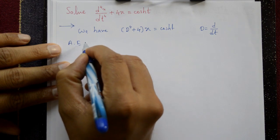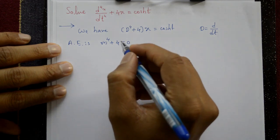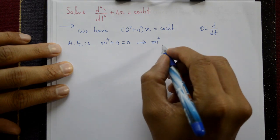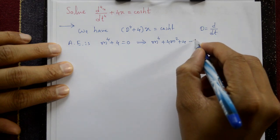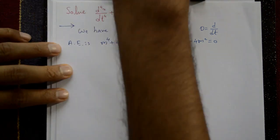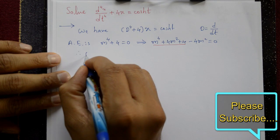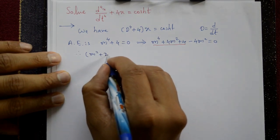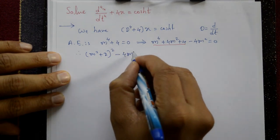The auxiliary equation is m⁴ + 4 = 0. To factor this, we add and subtract 4m²: m⁴ + 4m² + 4 - 4m² = 0. This gives (m² + 2)² - (2m)² = 0.